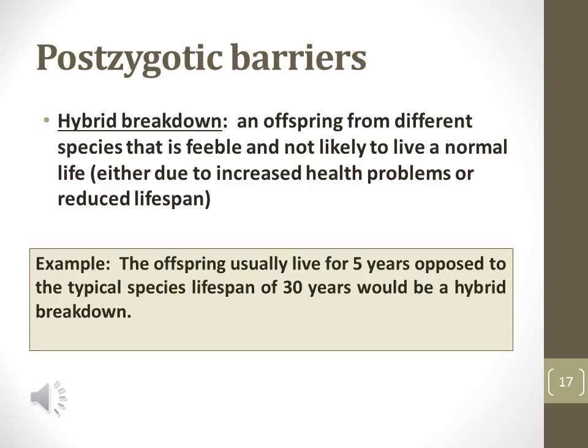The last type of postzygotic barrier is hybrid breakdown. Hybrid breakdown is characterized when the hybrid offspring are born with poor health and do not survive to reproduction. An offspring that lives for five years, opposed to the typical species lifespan of 30 years, would be an example of hybrid breakdown.